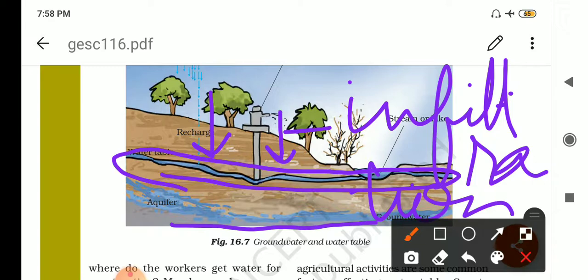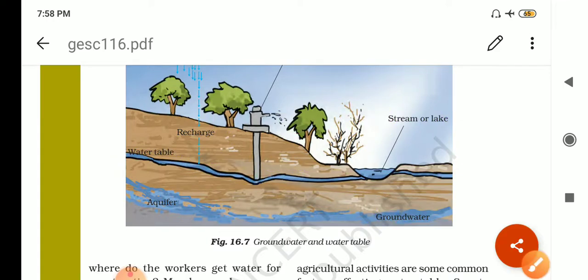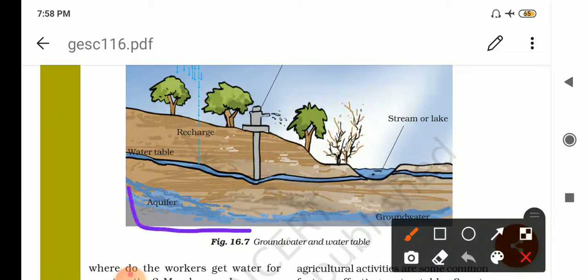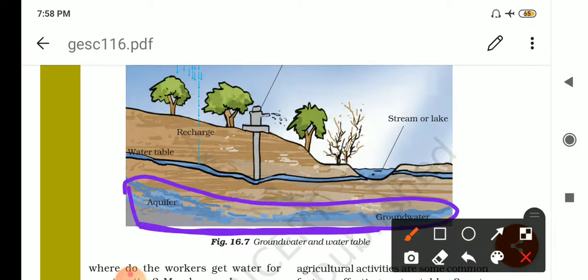This reservoir formed above the impervious layer of rock or clay is termed as aquifer. You know, after that the impervious rocks are there, water will not go down. This is called the aquifer. That is written here, this is called the aquifer.